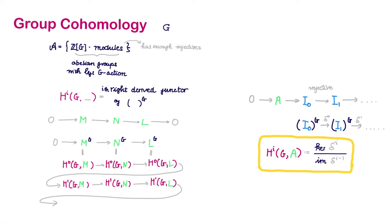Now that we've had the notion of right-derived functor, we can come back to our original story and define group cohomology.